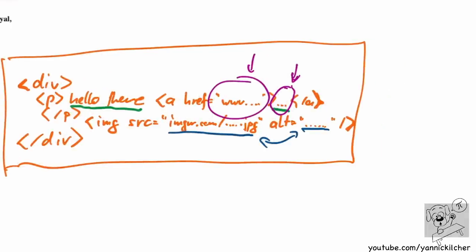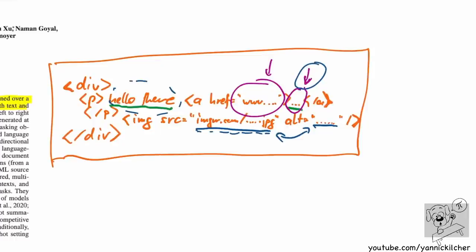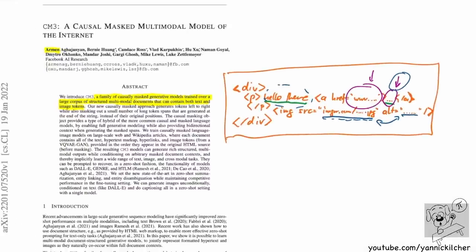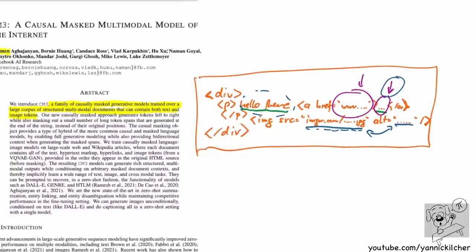For example, an image could be described not only by the alt text, but also by the surrounding text - it's reasonable to assume the surrounding text might have something to do with it. It's also reasonable to use surrounding images and text to disambiguate entities. If we had a model that could directly learn the structure of HTML, we could exploit all the work that went into creating that HTML, which is essentially what front-end programmers do - this is human ingenuity in creating these structures.